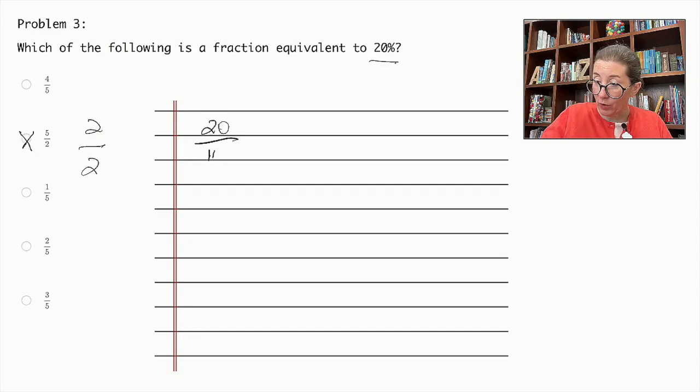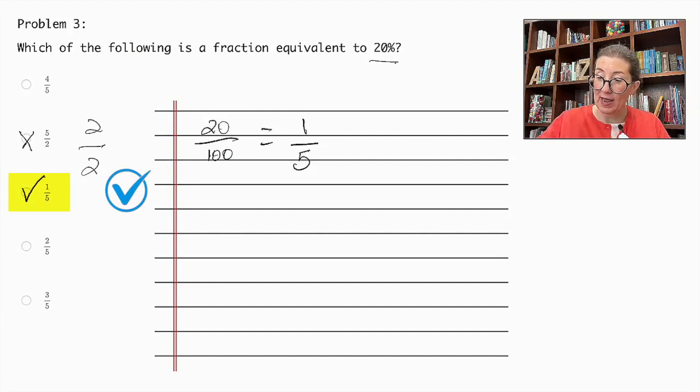20 over 100. And in order to simplify, we can divide each side by 20. So the top and the bottom. 20 divided by 20 is 1. And 100 divided by 20 is 5. So the answer is 1 out of 5.